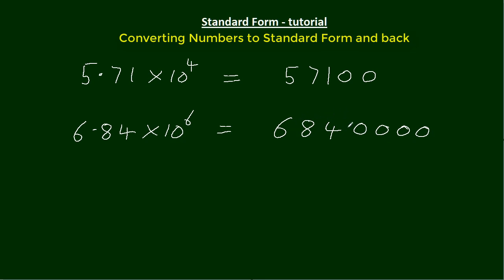We've got here 6.84. So we go 1, 2, 3, 4, 5, 6, because it's 10 to the 6. Another way of looking at it, if you've got something 10 to the 6 and it's in standard form, you should end up with seven numbers here before you end up with a decimal point there.